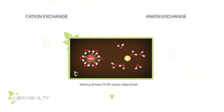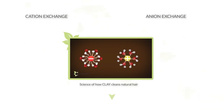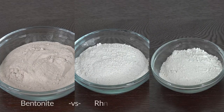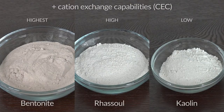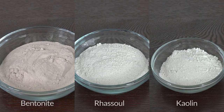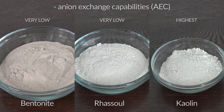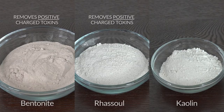There are two types of ion exchanges: cation exchange and anion exchange. If you have no idea what I'm talking about, pause this video and watch the previous video on the science of how clay cleans your hair. For positive cation exchange capabilities, even though the sodium version of bentonite clay is higher than the calcium version, overall bentonite clay scores the highest out of rasul and kaolin clay. For negative anion exchange capabilities, bentonite and rasul clay score very low compared to kaolin clay.